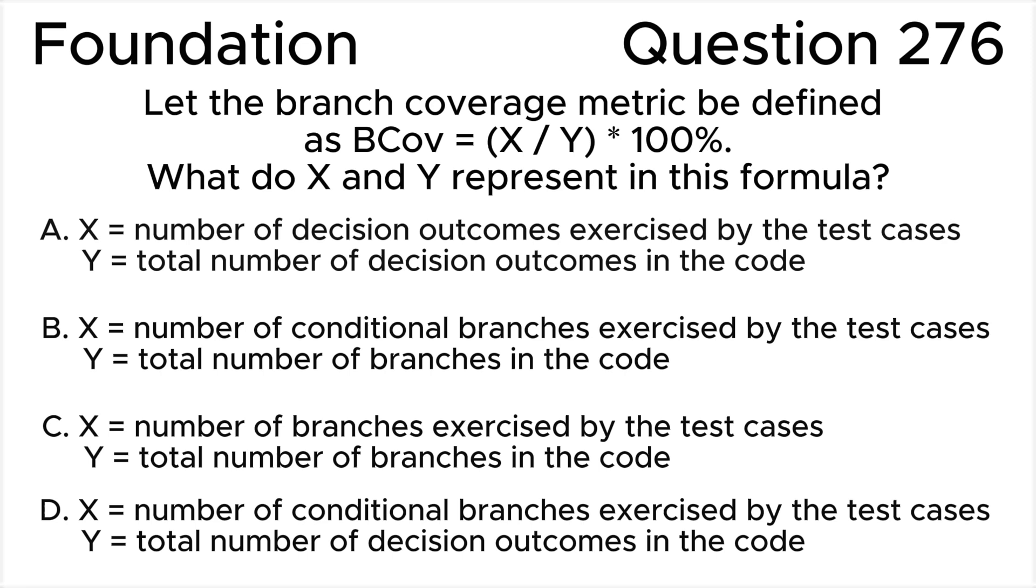Option A: X equals number of decision outcomes exercised by the test cases, Y equals total number of decision outcomes in the code. Option B: X equals number of conditional branches exercised by the test cases, Y equals total number of branches in the code.